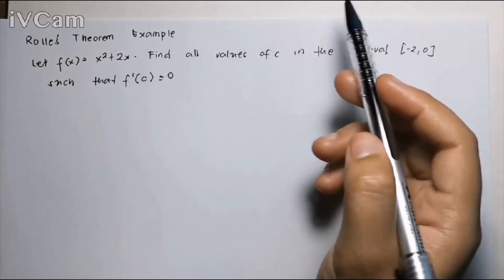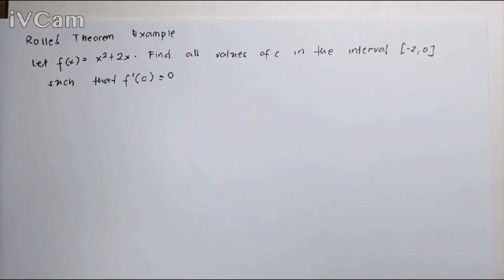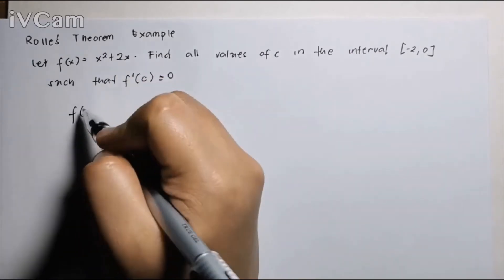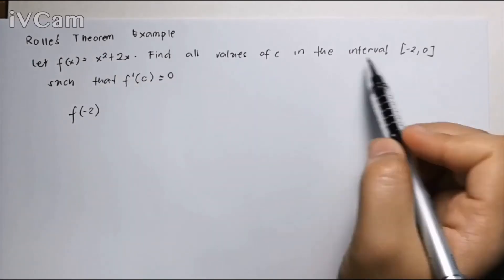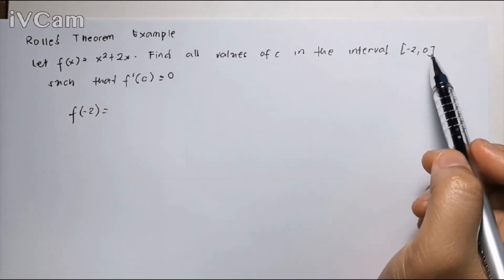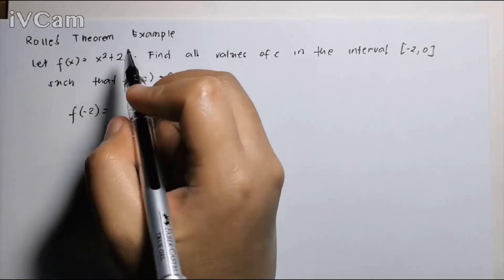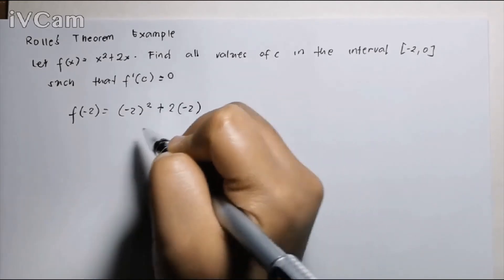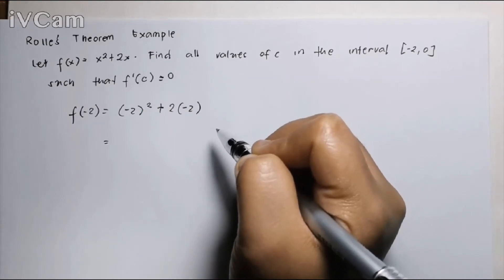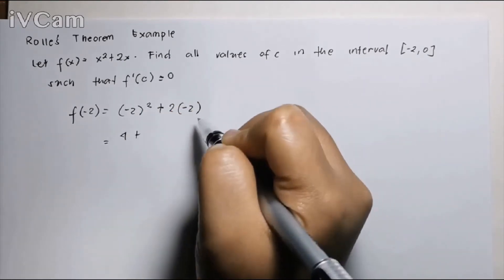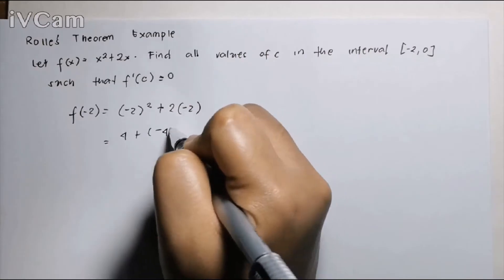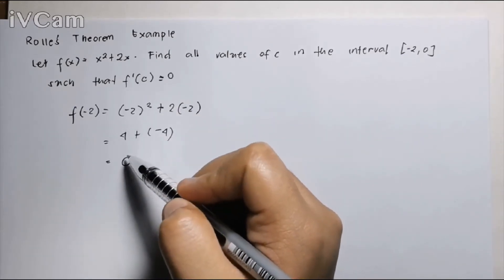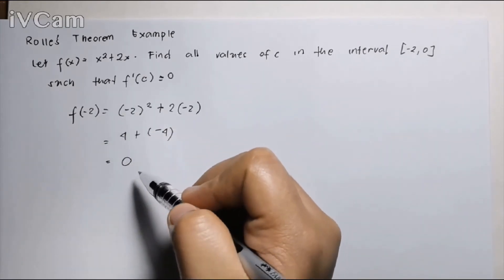To check if this is a valid function, let us first try to test the function if x is negative 2. That is, at the first number or point or x value in this interval. So, this is negative 2 squared plus 2 times negative 2. If we solve this, this is equal to 4 plus negative 4. So this is 0. Since 0 is not undefined, that means the function is continuous at negative 2.